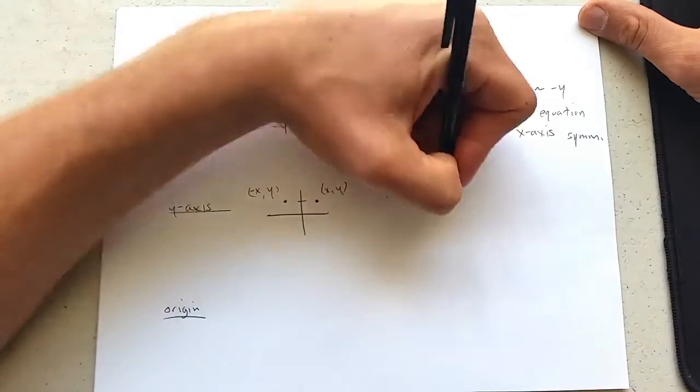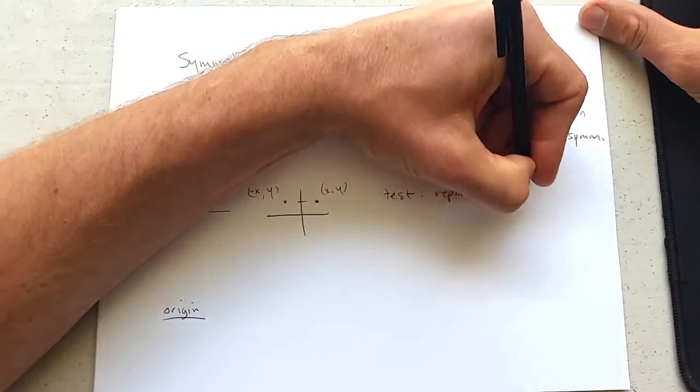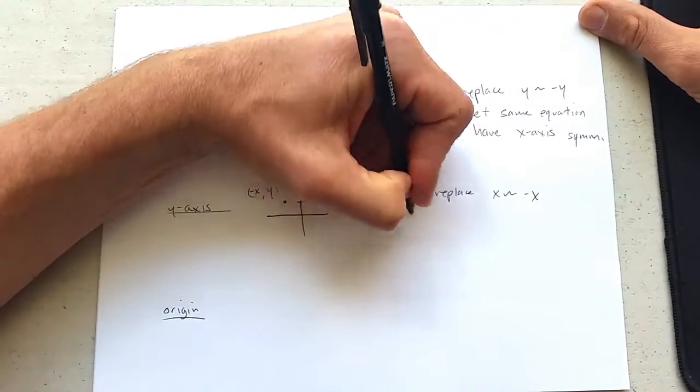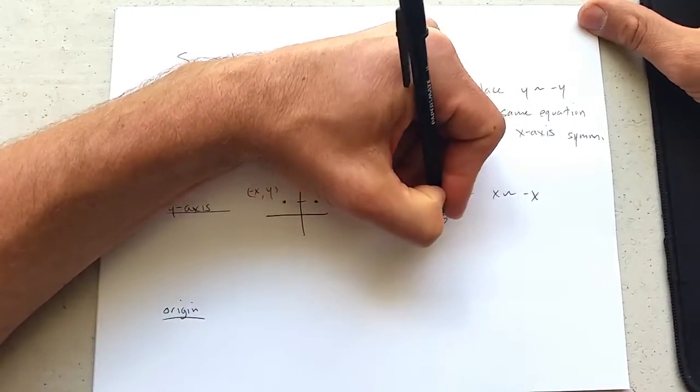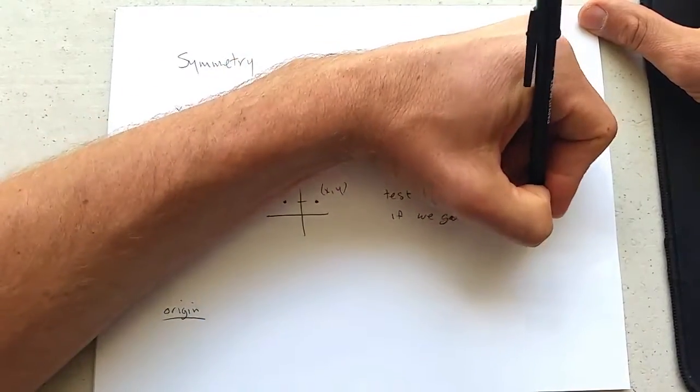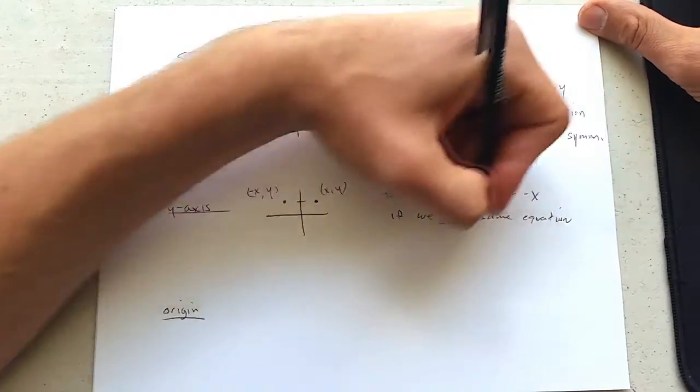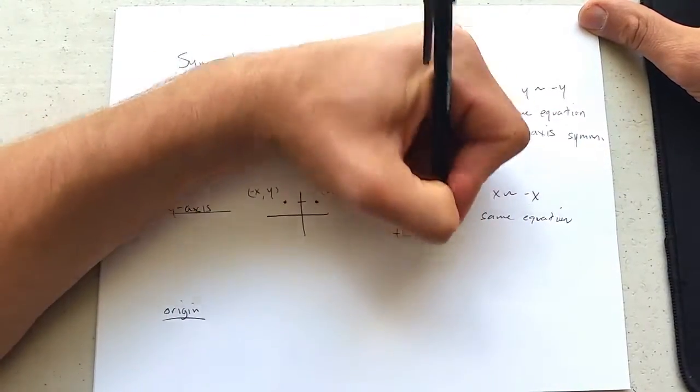So we're going to test for this. We replace x with negative x. And if we get the same equation, then we have y-axis symmetry.